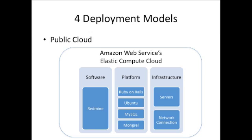If an IT department were interested in setting up Redmine in Amazon's cloud, they would search through the Amazon machine instances to see if a Redmine AMI already existed. If it does, they could launch it instantly. If it doesn't, they could create one themselves and then perhaps share that AMI with the rest of the Amazon community.